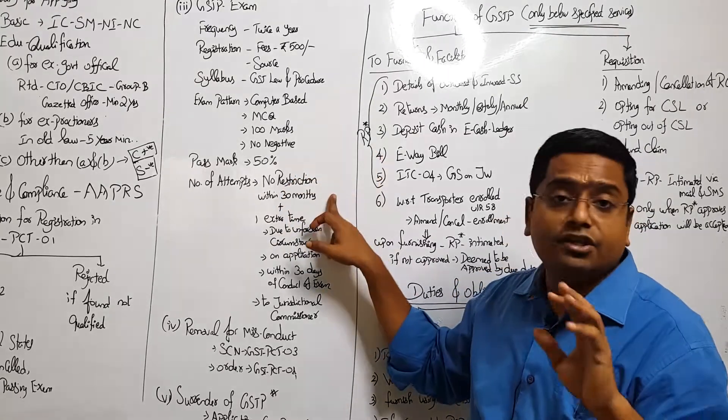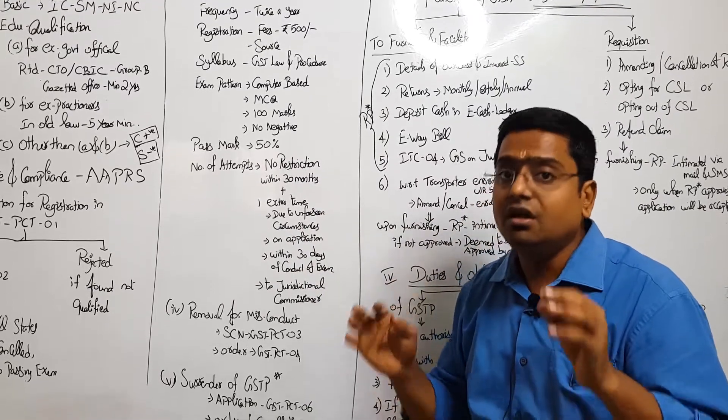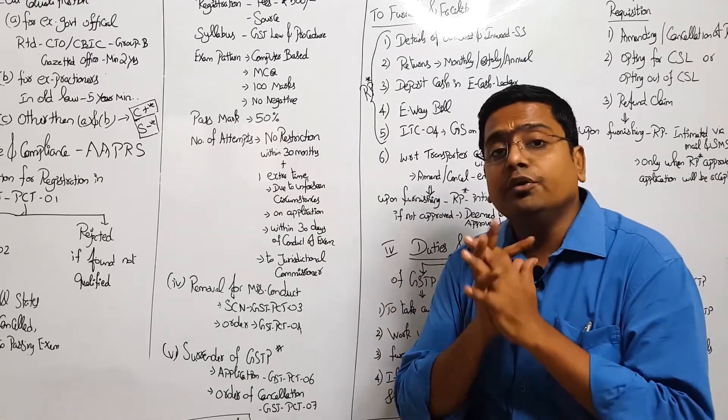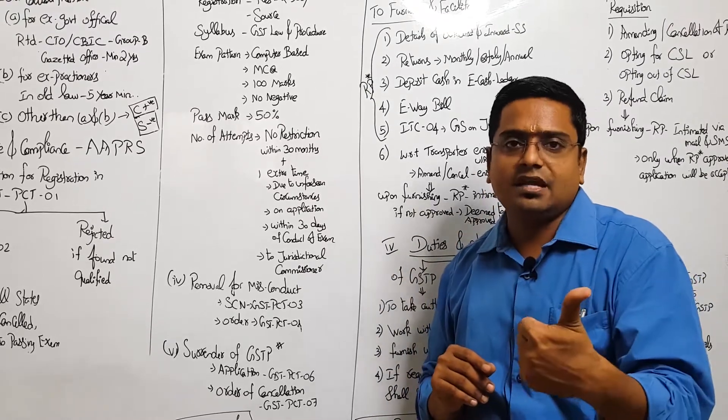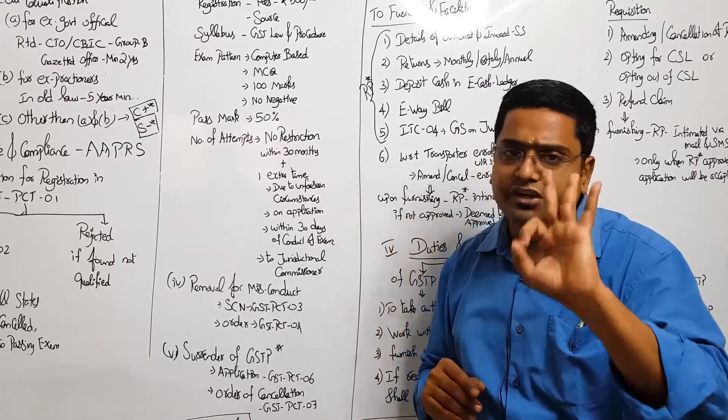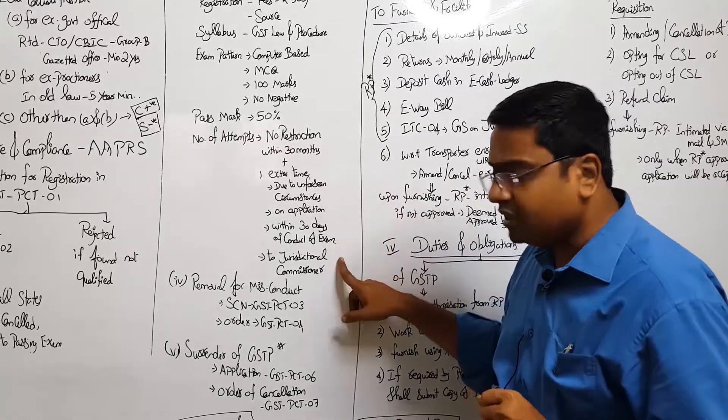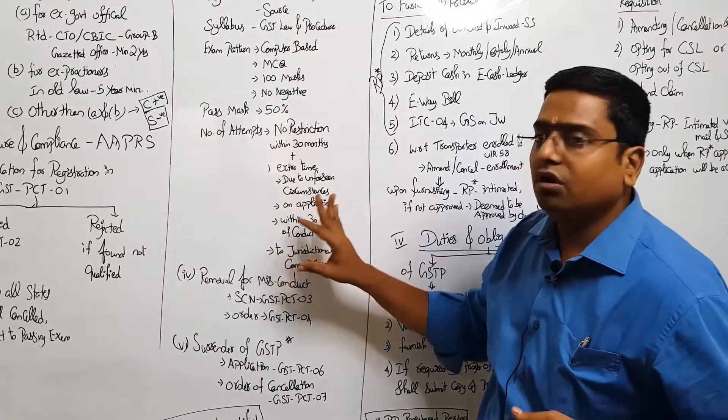So out of hundred questions, if you answer 50 questions correct, you have passed this examination. And there is no restriction of number of attempts. In those 30 months, you can write any number of examinations which come across. If at all, due to unforeseen circumstances, if you are forced to miss one examination, you can get one additional examination by making an application to the jurisdictional commissioner within 30 days of the conduct of the examination.